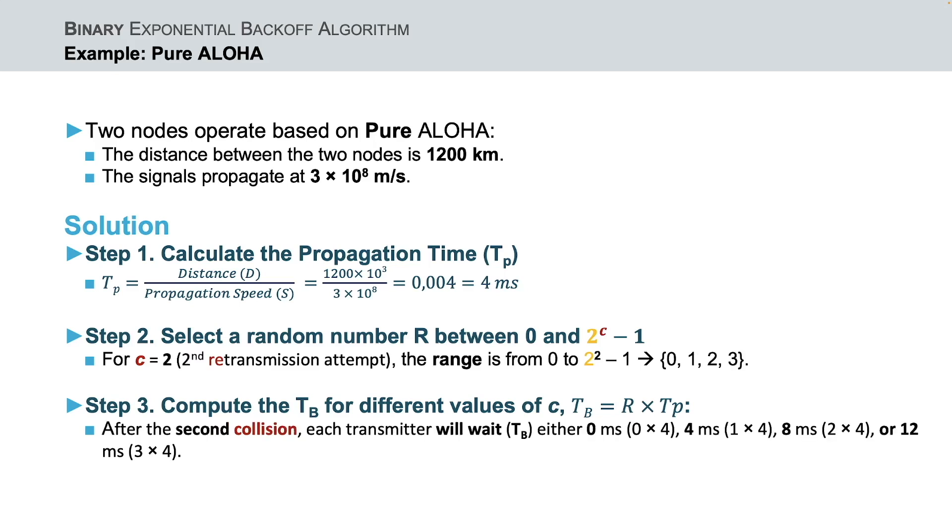If the first retransmission was not successful, the two transmitters will have to retry again. And in this case, the c variable will increase by 1 and will be equal to 2 and thus the new range is now from 0 to 3. As a result, based on the outcome of the random value r, after the second collision, each transmitter will wait for either 0, 4, 8 or 12ms.